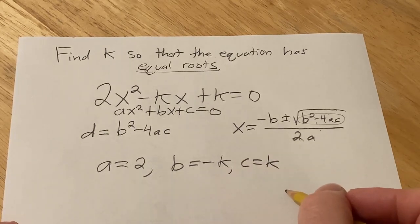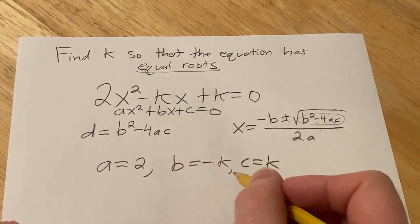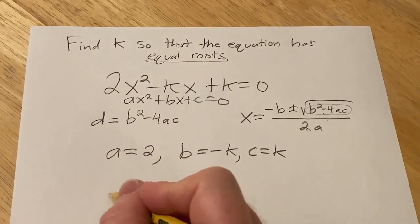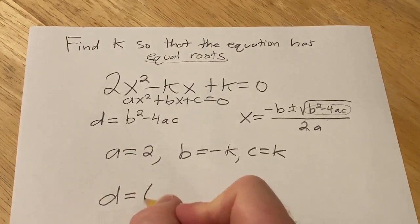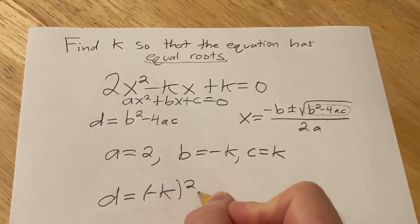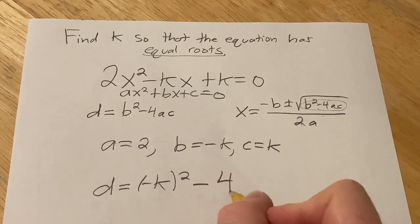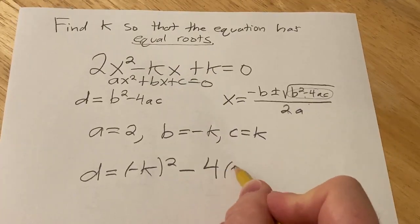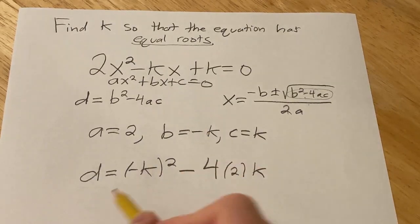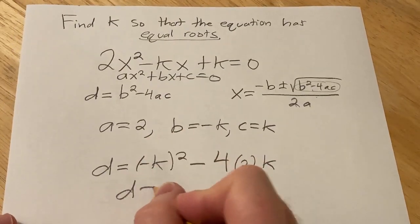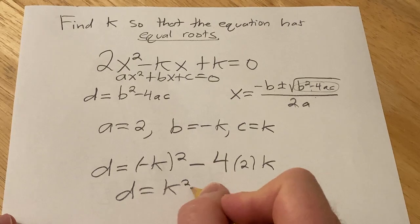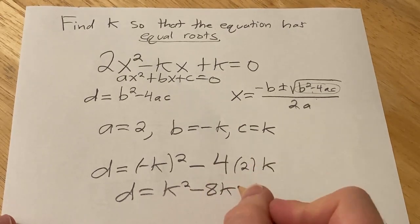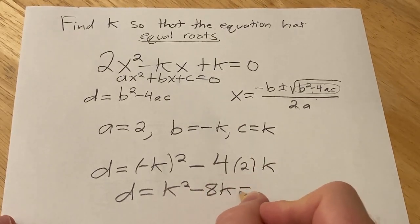So now what we'll do is plug all of these numbers into d. So d is going to be (-k)² - 4ac. That looks okay. So d = k² - 8k, and we want this to be equal to 0.